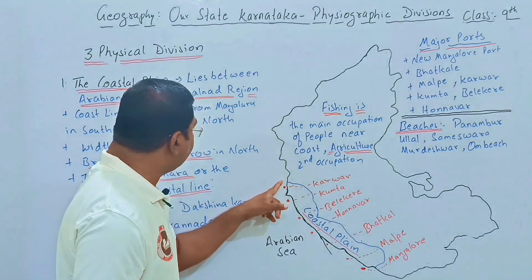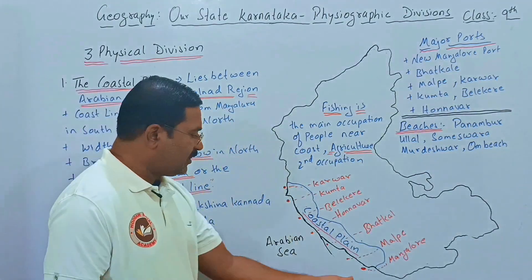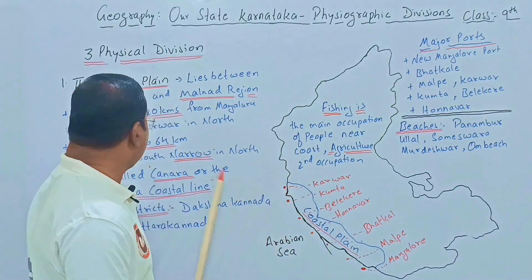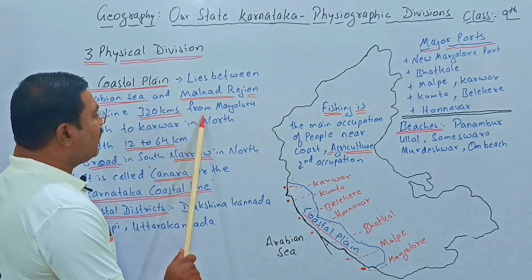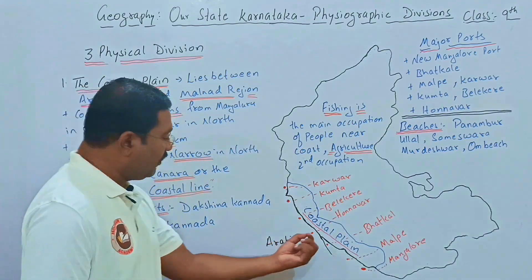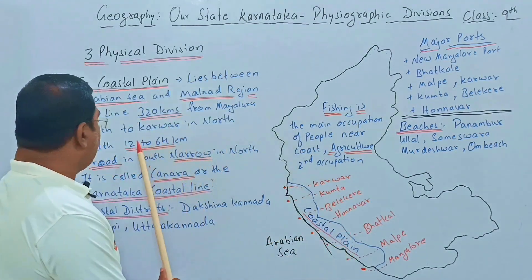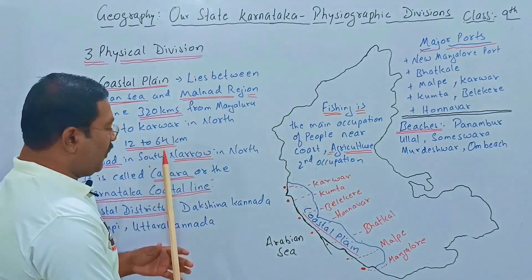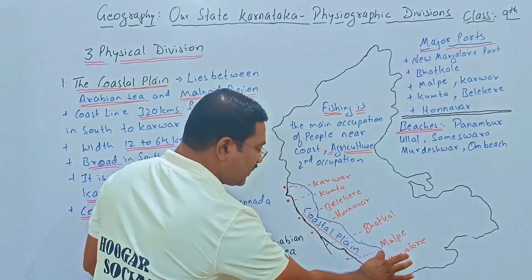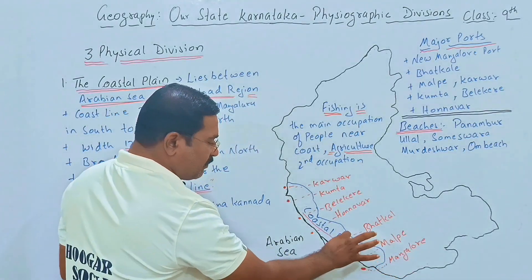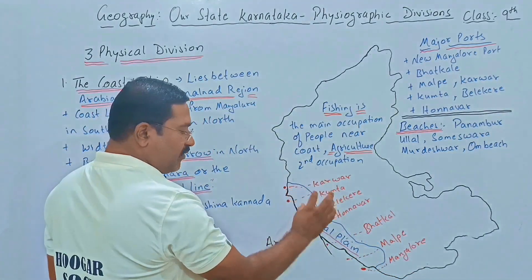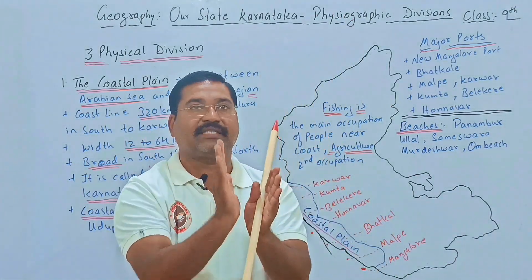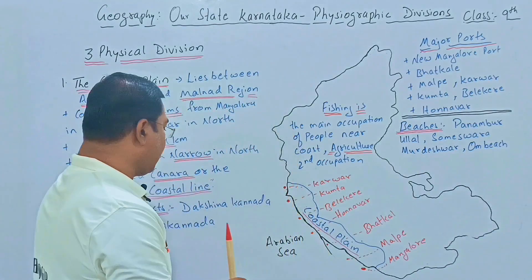The coastal line is 320 kilometers, from Mangaluru in the south to Karwar in the north. In terms of width, it is 12 to 64 kilometers. Towards the southern side it is broad, and as it moves northward it becomes narrow.